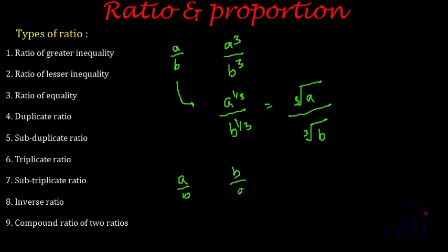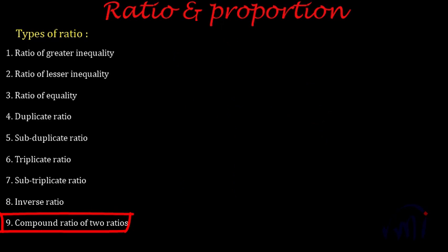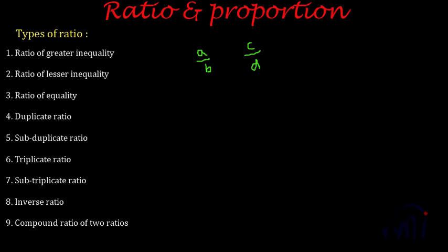The inverse ratio: if you have a ratio A is to B, then B is to A is called the inverse ratio of A is to B. Finally, the compound ratio of two ratios: if you have A is to B and C is to D, then the ratio of the product of the antecedents (A×C) to the product of the consequents (B×D) is called the compound ratio. These are the different types of ratios we will use while solving problems.